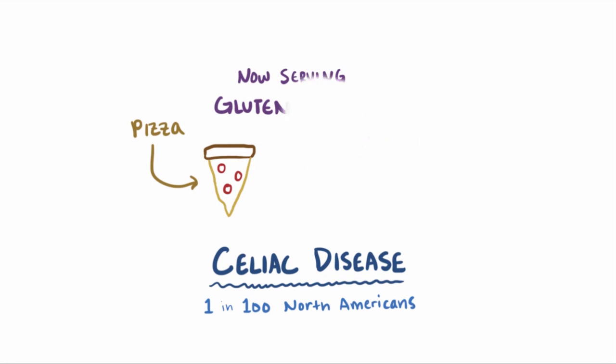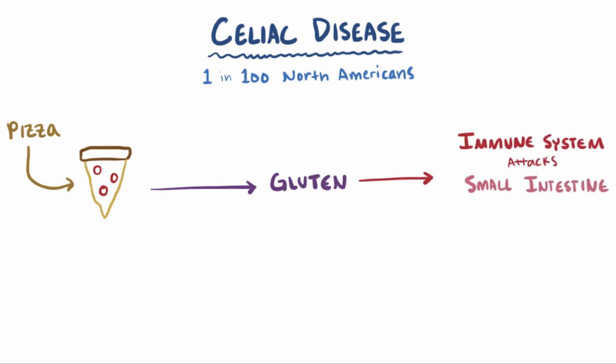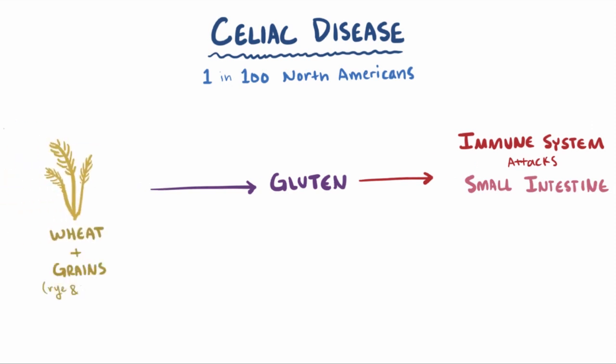Celiac disease is currently understood as an immune system-mediated disorder where the gluten in food triggers the body's immune cells to attack the cells in the small intestine. Gluten is found in all sorts of wheats and grains, including rye and barley.